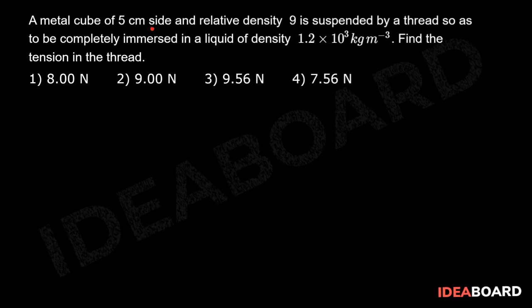A metal cube of 5 cm side and relative density 9 is suspended by a thread so as to be completely immersed in a liquid of density 1.2 × 10³ kg/m³. Find the tension in the thread.